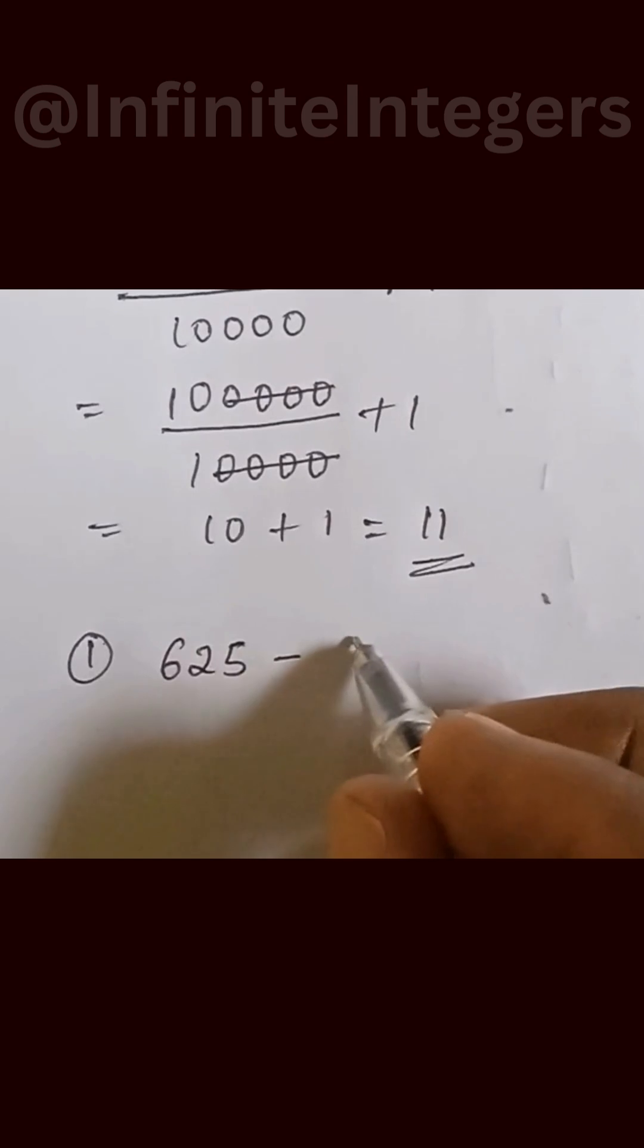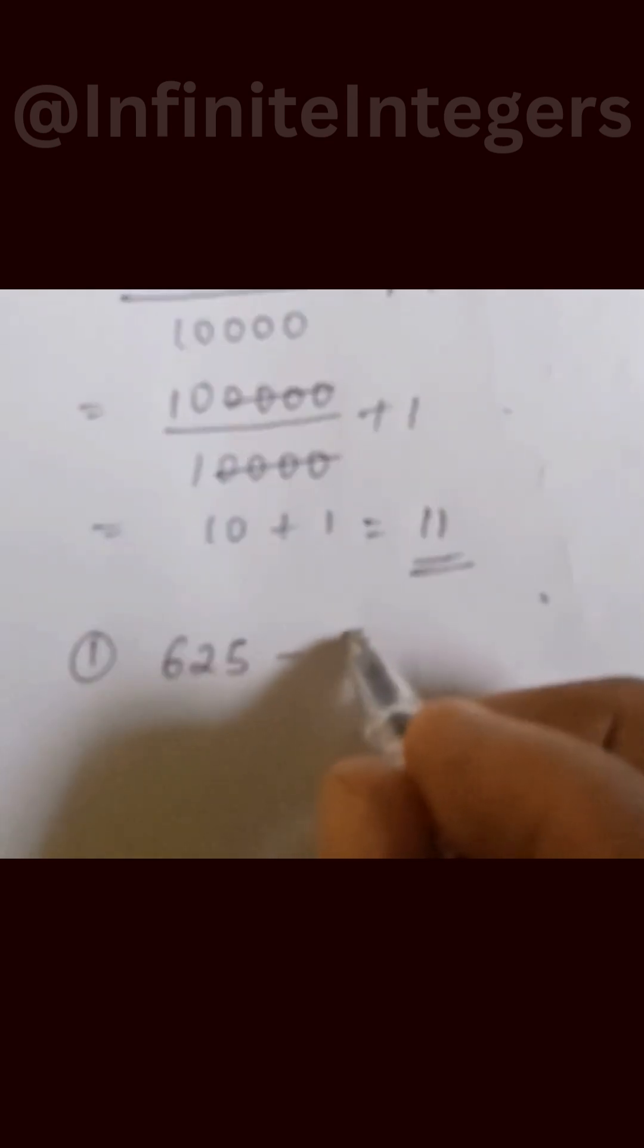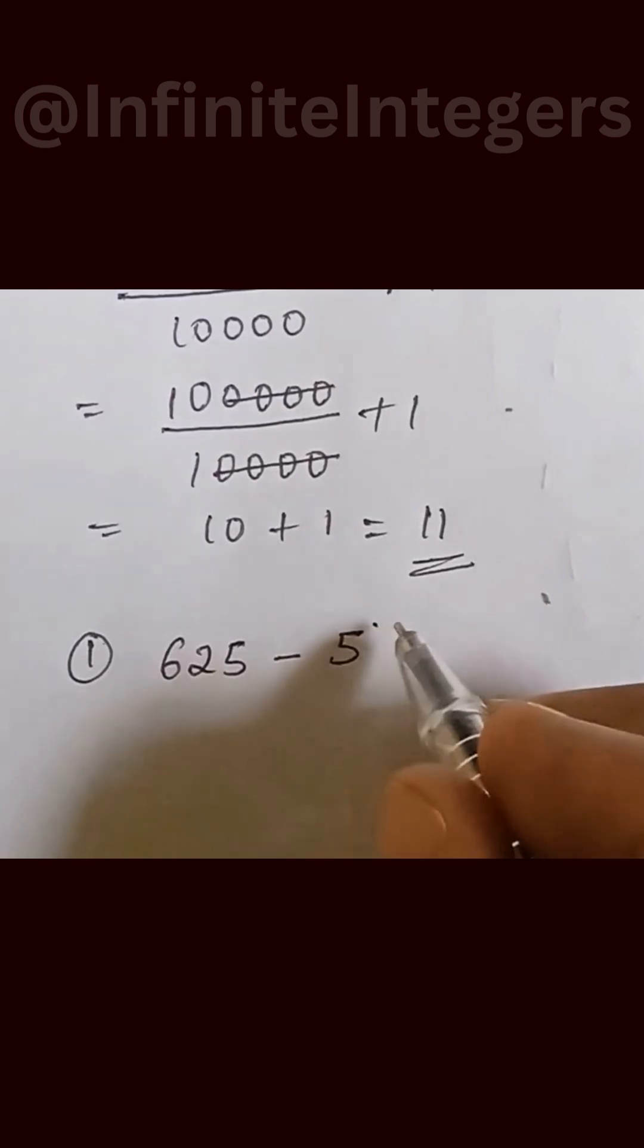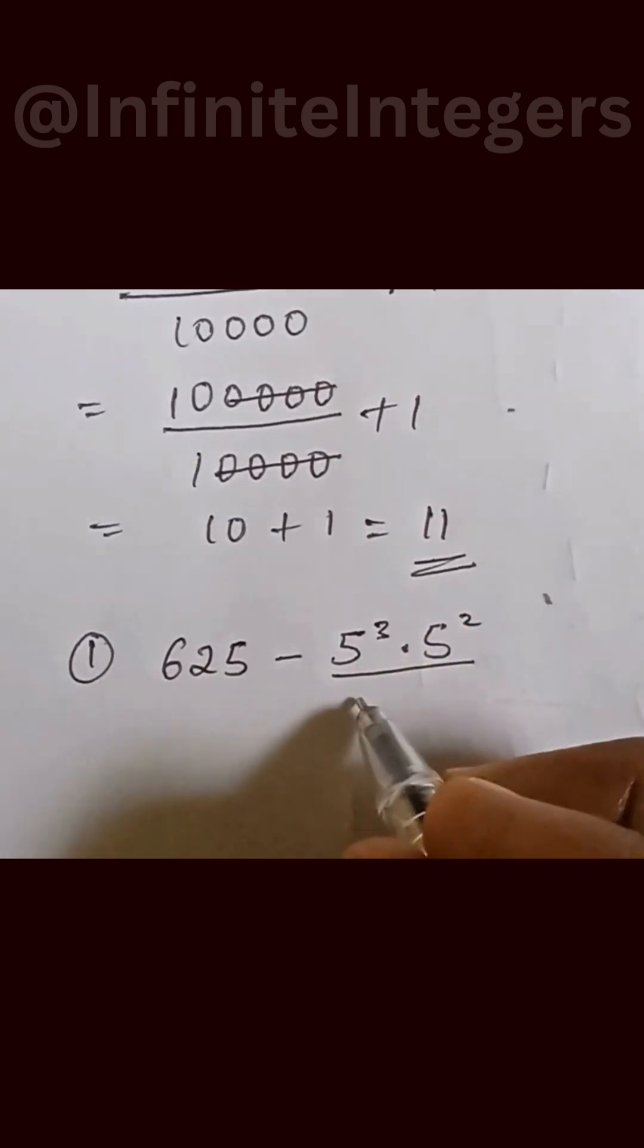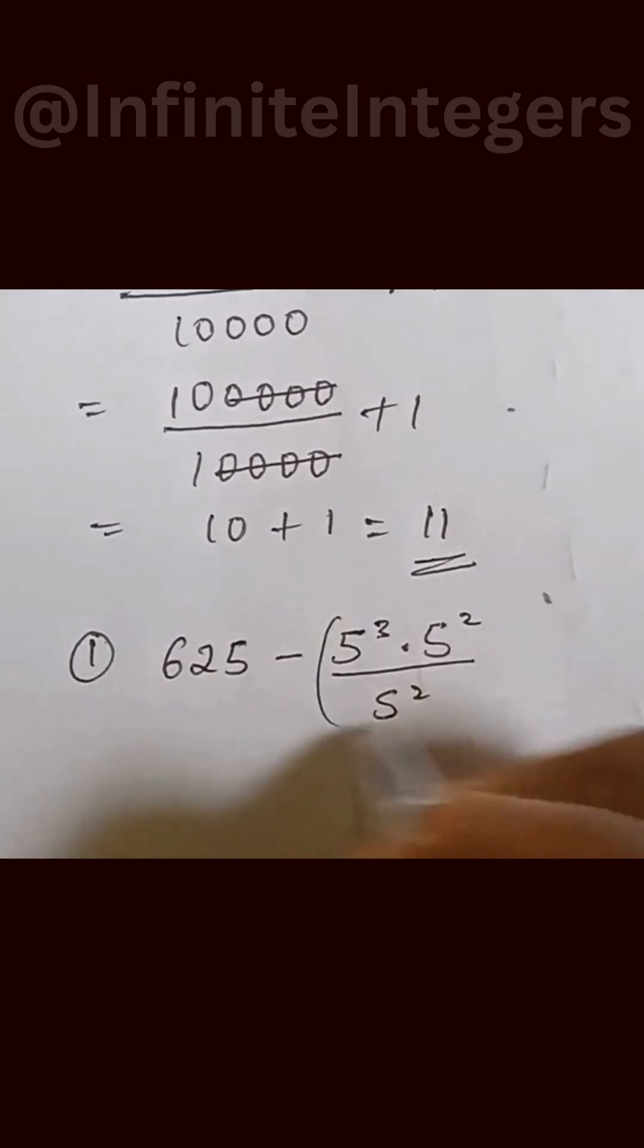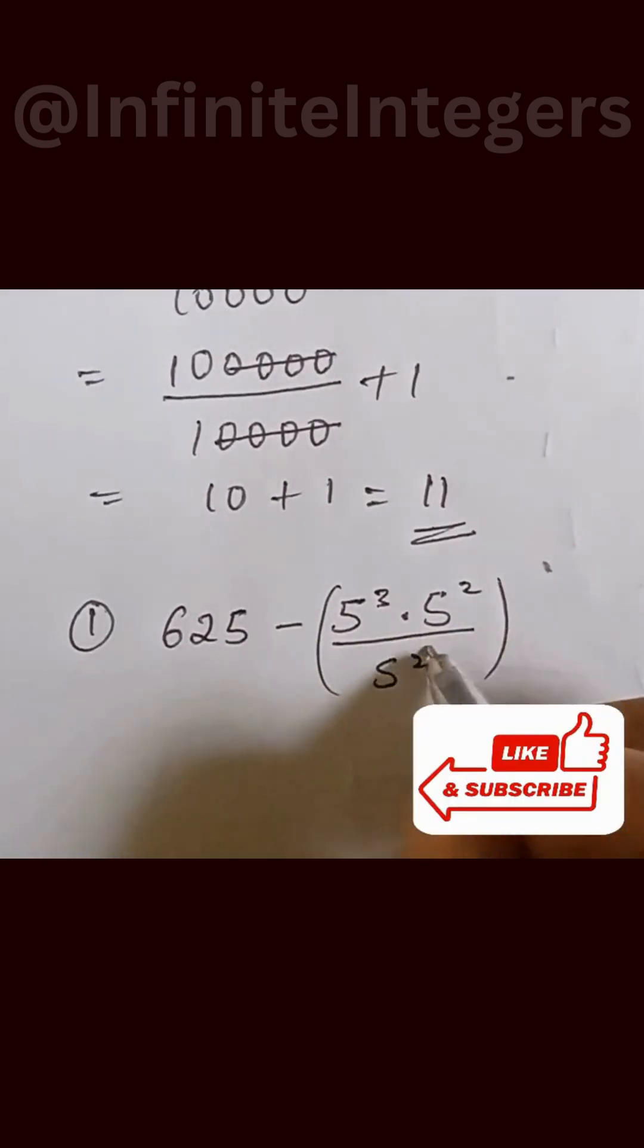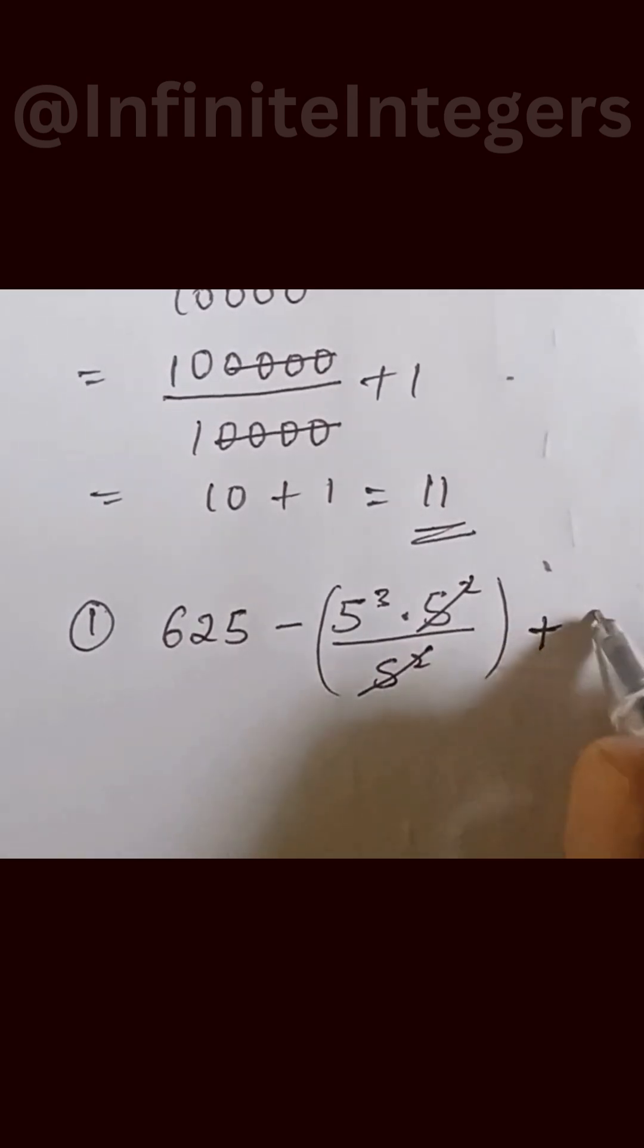And that can be expressed as 5 to the power of 5, 5 to the power of 3 multiplied by 5 to the power of 2 over 5 to the power of 2. Let's put that in the bracket. So this comes out, and that is plus 5 to the power of one.